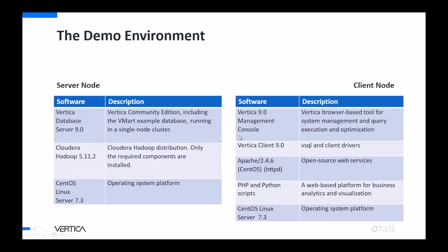The demo environment consists of two nodes. One is a server node which has Vertica database version 9.0 and Cloudera Hadoop 5.11.2 on CentOS. You can use any Hadoop distribution, and Vertica is installed on the same platform as Hadoop, though you can also access it when they are not on the same platform. The client node has the management console, Vertica client, Apache, and an application to show the dashboards.